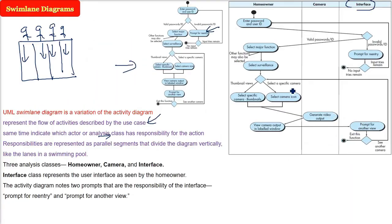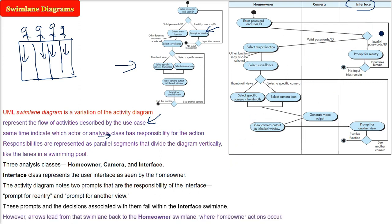So what we have seen here is the swim lane interface, or interface swim lane. These prompts and the decisions associated will fall under this category, in this swim lane. But they are going back to homeowner swim lane, where the homeowner actions occur.